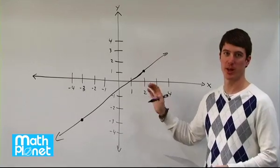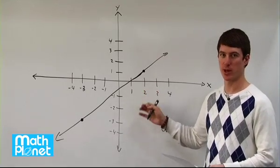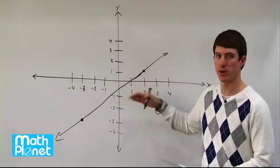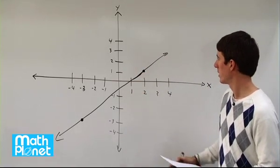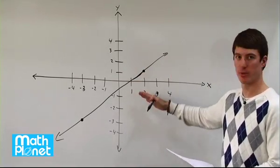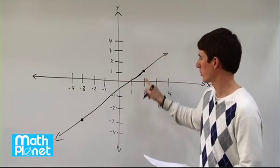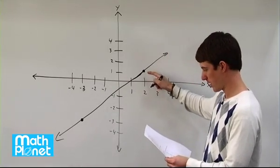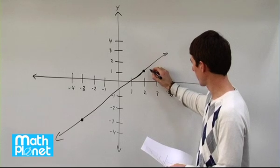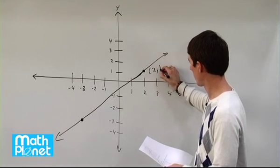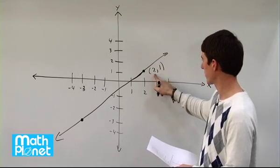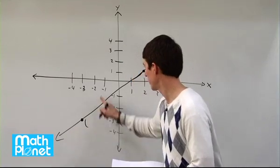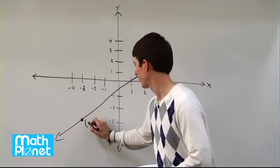Here we have a line of unknown equation, and we need to find the slope of that line. I've just drawn it roughly, and we know that it passes through these two circled points. It looks like one point is at x = 2, y = 1, and the other is at negative 3, negative 3.